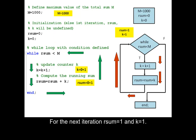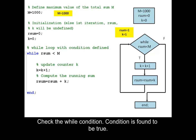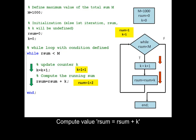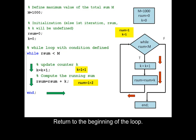For the next iteration, rsum equals 1 and k equals 1. Check the while condition — condition is found to be true. Update counter k. Compute value: rsum equals rsum plus k. Return to the beginning of the loop.